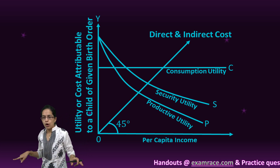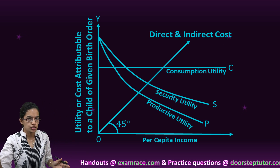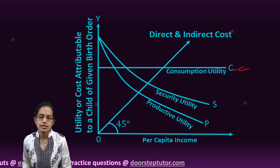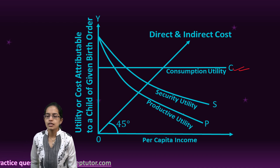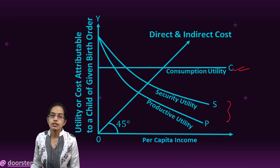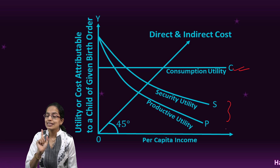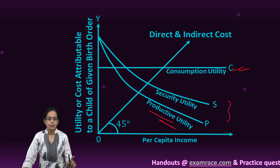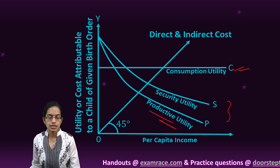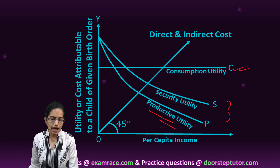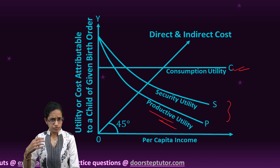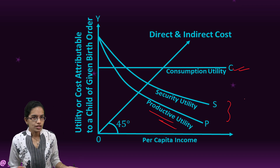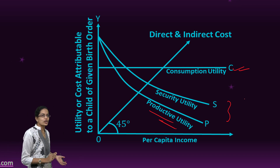If we plot this as per capita income versus utility, we can see that consumption utility remains constant with increasing per capita income. However, the security utility and productive utility both decline. The decline in productive utility is much steeper, attributed to the financial status and savings of the parents — with higher savings, they are less worried about the child turning into a productive asset.